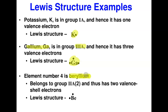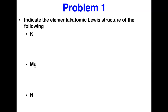Since beryllium belongs to group 2A, it's going to have two dots around its symbol. Let's do some examples. Potassium is in group 1A, so its Lewis dot structure is simply K with one dot. Magnesium belongs to group 2A, so the Lewis structure is Mg with two dots on separate sides.